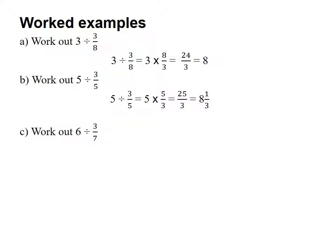Next example: 6 divided by 3 over 7. The rule is we invert and multiply. So it becomes 6 times 7 over 3. 6 sevens are 42 divided by 3. 42 divided by 3 is 14.